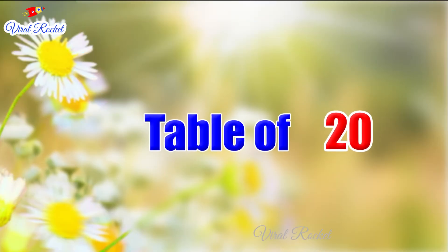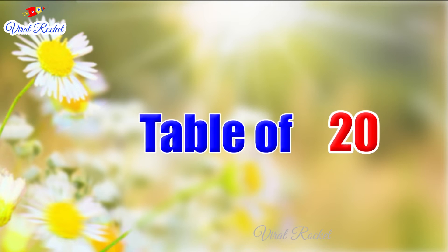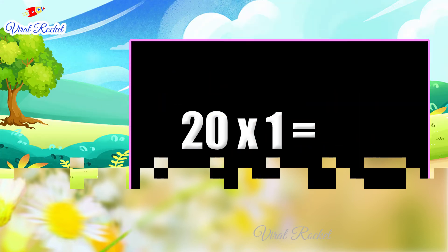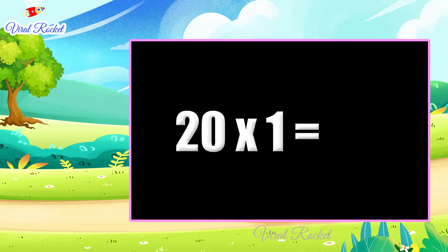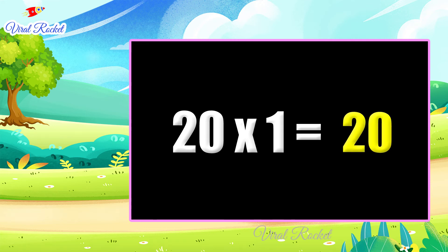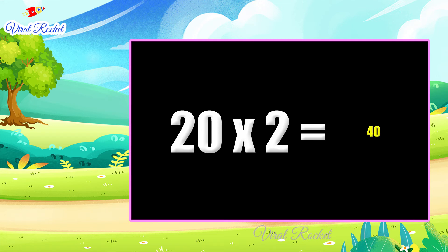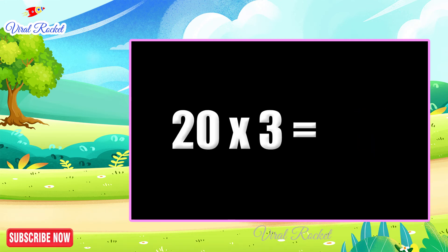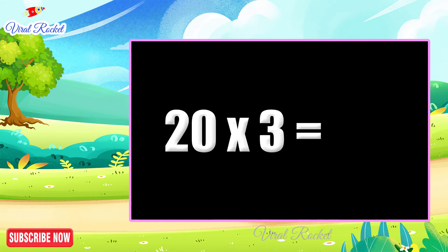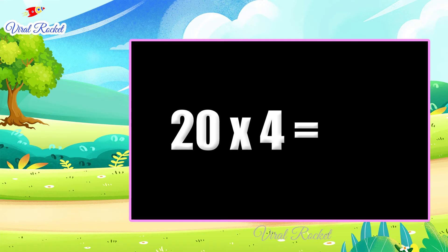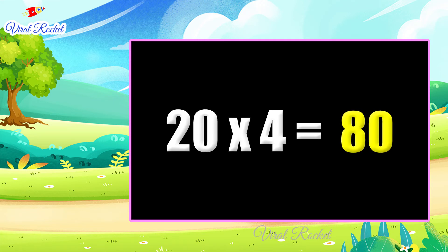Table of 20: 20 × 1 = 20, 20 × 2 = 40, 20 × 3 = 60, 20 × 4 = 80.